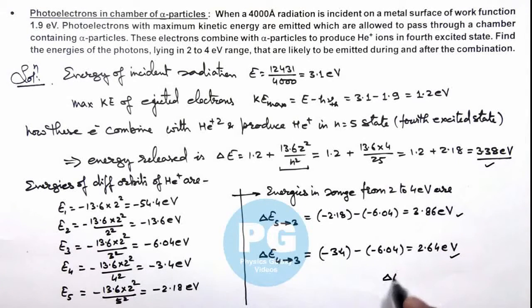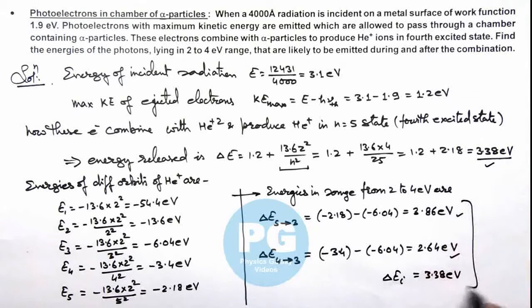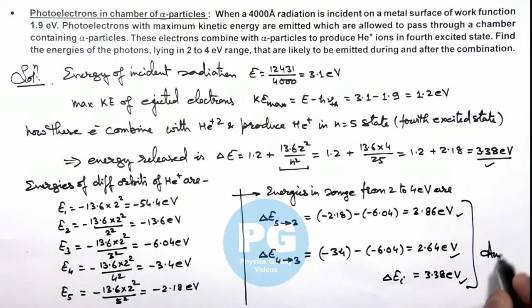So the delta E emitted initially during combination is 3.38 electron volt, and the photons from the 5→3 and 4→3 transitions are 3.86 and 2.64 electron volt respectively. These are the possible answers for this problem.